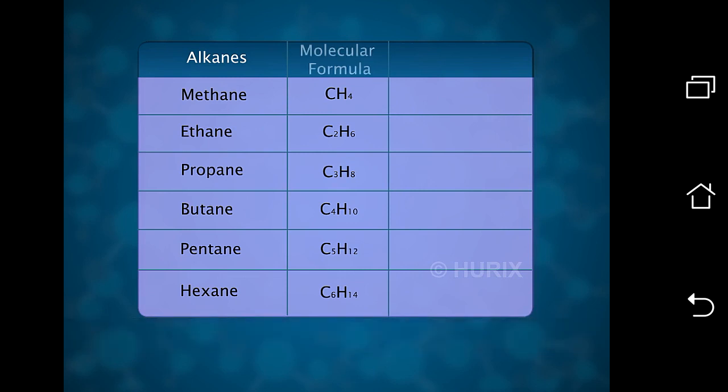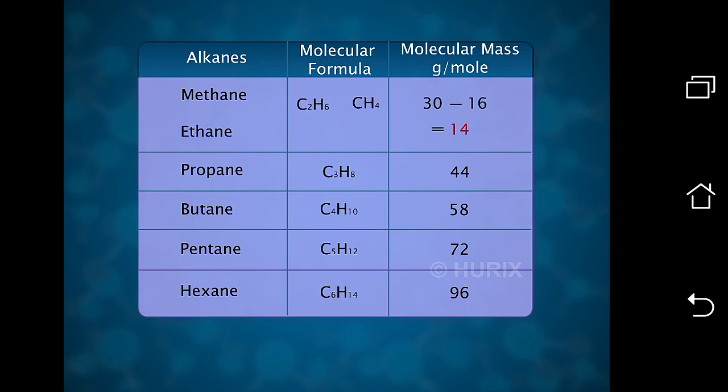Look at this table. The molar mass of methane is 16 gram per mole. The molar mass of ethane is 30 gram per mole. When we find out the difference in molar mass between two successive members, it is 14 and constant. This difference corresponds to the molar mass of the linking unit, CH2.